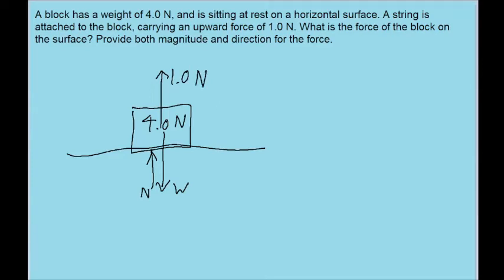Now this problem is asking for the force that the block is exerting on the horizontal surface. There are a couple different ways we could solve this problem, but the first method I'm going to consider is to note that because the block is at rest, that means that the net force, the sum of all the forces on the block, must be equal to zero. So if we add up all three forces together, then that should be zero.